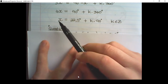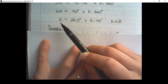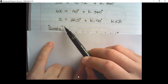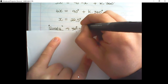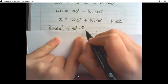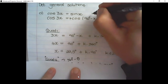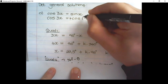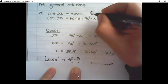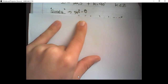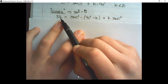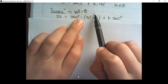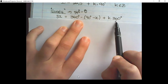The next part is quadrant 4. In quadrant 4, we have 360° minus whatever angle we use. Going back up, the angle representing theta is (90° − x), so this entire expression will be theta. We write: 3x equals 360° minus (90° − x), plus k times 360.